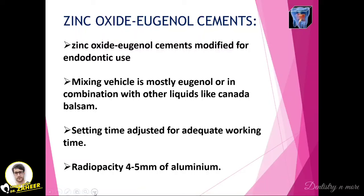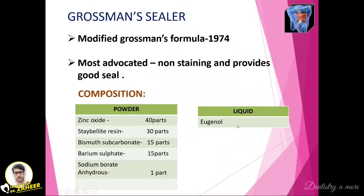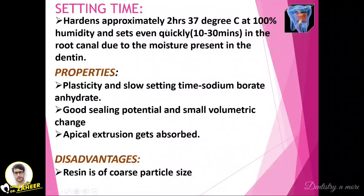Zinc oxide eugenol sealers are modified for endodontic use. The mixing vehicle is mostly eugenol or a combination with other liquids. Setting time is adjusted for adequate working time and radiopacity is 4 to 5 mm of aluminum equivalent. The first one is Grossmann's sealer — the modified Grossmann's formula from 1974 — which is the most advocated and non-staining, providing a good seal. It has two parts: powder and liquid. The powder consists of zinc oxide, stabilized resin, bismuth subcarbonate, barium sulfate, and sodium borate (anhydrous), in proportions of 40, 30, 15, 15, and 1. The liquid is eugenol.